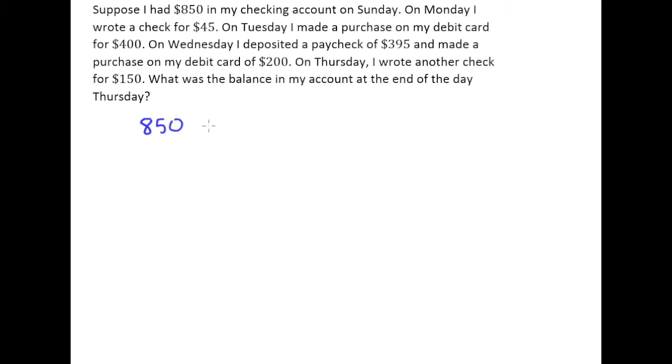So it says on Monday, I wrote a check for $45. Well, that's money coming out of my account. So I will count that as a negative amount of money. So I'm adding a negative amount. Now, on Tuesday, I made a purchase on my debit card for $400. That's also a negative, money coming out of my account.